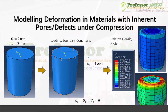We will use Abaqus CAE to do so. The problem definition is such that I will create a cylindrical specimen with a diameter of two millimeters and a length of three millimeters. I will then apply a compressive boundary condition — fixing the bottom surface of the sample and applying a uniform displacement of one millimeter from the top. You can also apply pressure if you have a force-controlled test in reality.